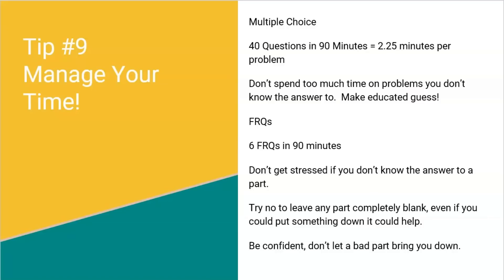You get all six FRQs at the same time and can do any of them in any order. My recommendation: don't even look at or read number six until you're confident you've done your absolute best on questions one through five. Most students accumulate their points on questions one through five. Question one is usually pretty easy, so knock that one out first. If you struggle with probability and get a probability question, maybe save that till the end. Focus on getting one through five done. If you have five minutes left, just read number six and try part A.